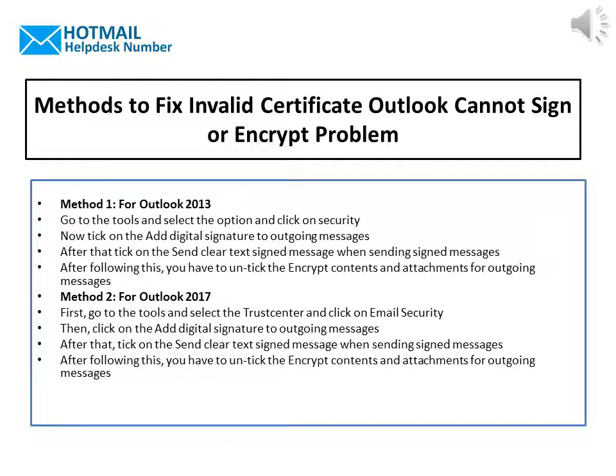Click on Security, then tick on the Add Digital Signature to Outgoing Messages. After that, tick on the Send Clear Text Signed Message when sending signed messages. After following this, you have to untick the Encrypt Contents and Attachments for Outgoing Messages.